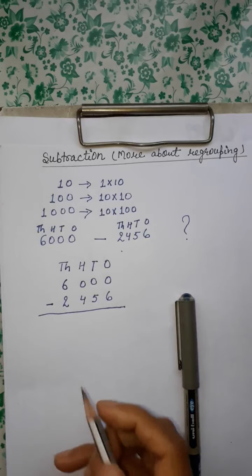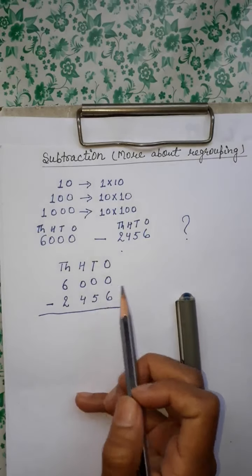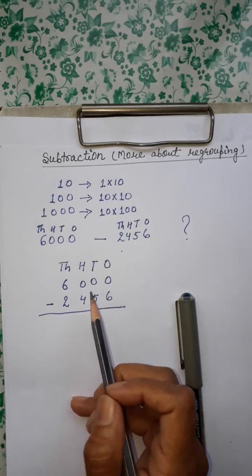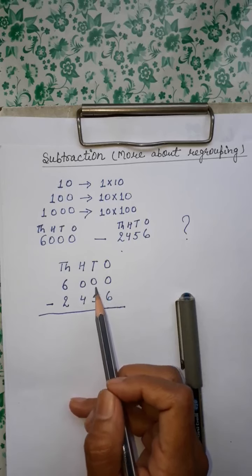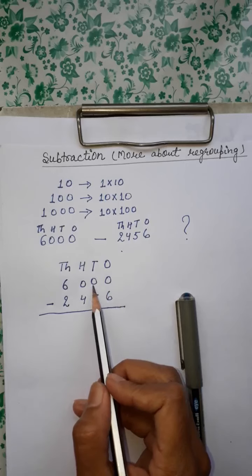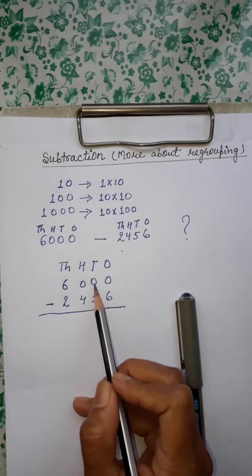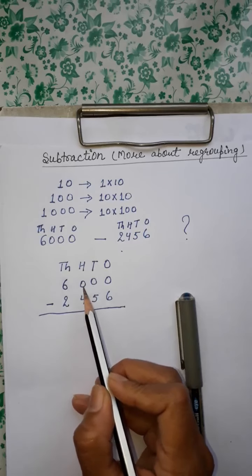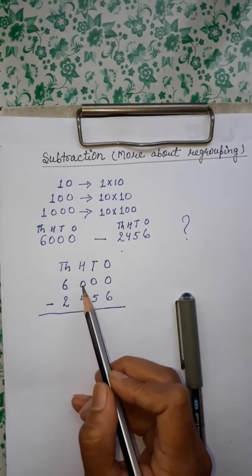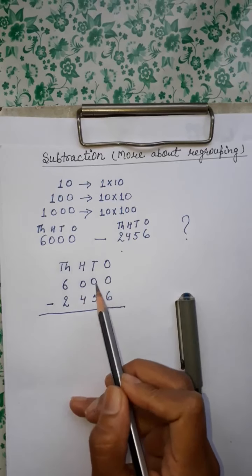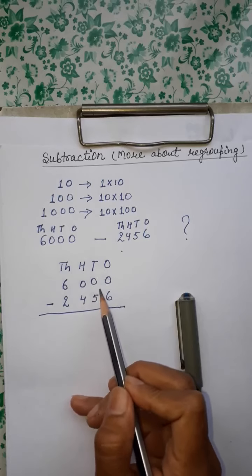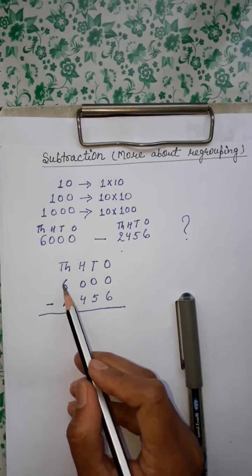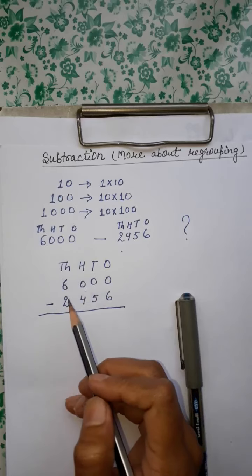Now see — 0 is smaller than 6, toh hum 6 ko kaise subtract karein 0 se? Phir kya karega? Yeh apne padosi ke paas jaega ki bhai aapke paas kuch hai toh aap mujhe de dijiye. Iske paas bhi kuch nahi — yeh toh khud 0 hai. Isne bhi kaha bhaiya mere paas kuch nahi, ki main apne padosi se pooch kar dekhta hoon. Yeh apne padosi ke paas gaya — yeh bhi kya hai? 0 hai. Ab toh 6 jo 1s ke place par hai, usne socha lagta hai mera kuch nahi ho sakta — toh 100 ne kaha ruko ruko bhai, mere padosi 1000, unke paas bahut hai, main unse lekar aapko deta hoon.